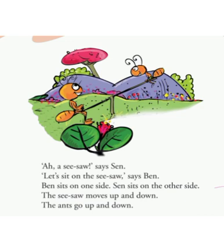Now let's read. "A seesaw!" says Sen. "Let's sit on the seesaw," says Ben. Ben sits on one side. Sen sits on the other side. The seesaw moves up and down. The ants go up and down.